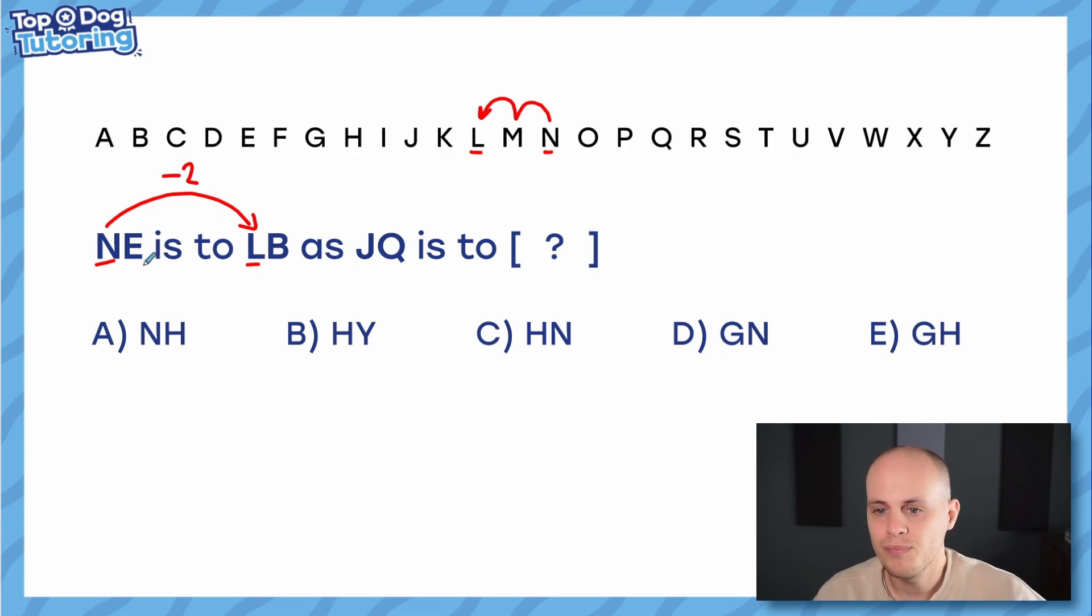Then we go ahead and we do the same for the second letter. Let's think about E becoming B. Is it the same? Sometimes it is. One, two, three. But in this case it is not. So when thinking about E becoming B, I'm going to put minus three. Now the beauty is we've done all the hard work now. All we have to do is apply the same thing to our new question, to our new code rather.